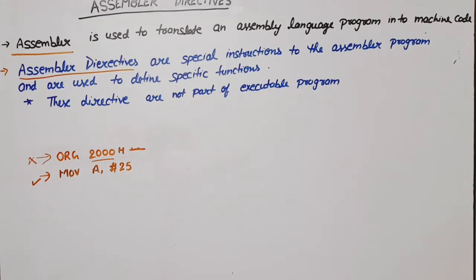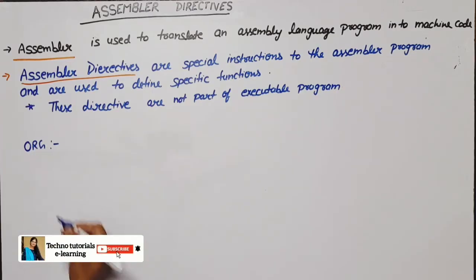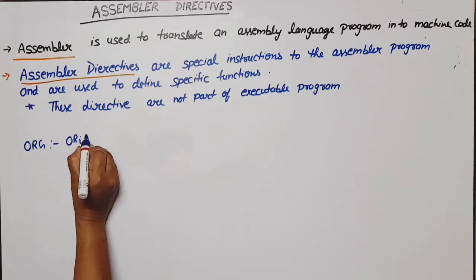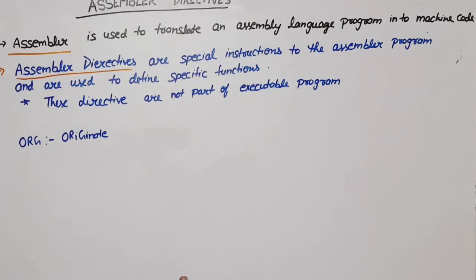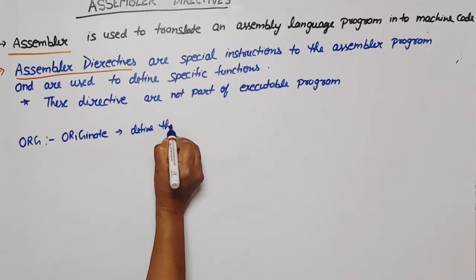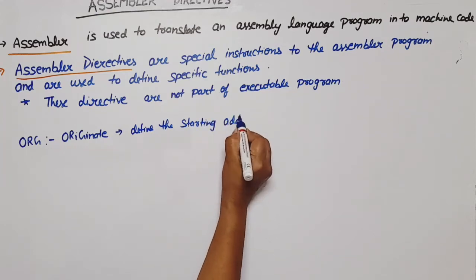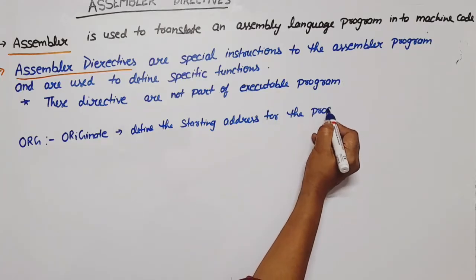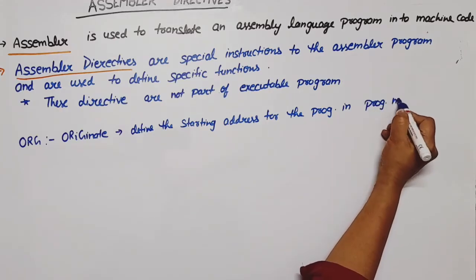In this video, we will discuss some assembler directives of 8051 which are generally used. The first one is ORG — O, R, G — which stands for ORIGINATE. This directive defines the starting address for the program in program memory, which is ROM. It defines where the code starts from.